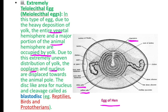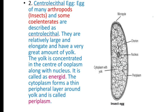This is the blastodisc, which shows the disc-like area for nucleus and cleavage. Next, after the telolecithal egg, is the centrolecithal egg. Eggs of many arthropods — for example insects — and some coelantroids are described as centrolecithal. They are relatively large and elongated, and have a very great amount of yolk. The yolk is concentrated in the center of the ooplasm along with the nucleus, which is called the energid. The cytoplasm forms a thin peripheral layer around the yolk, called the periplasm.